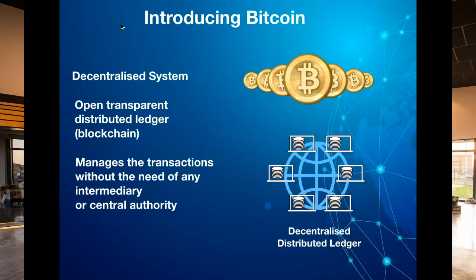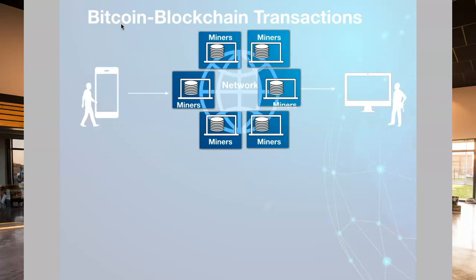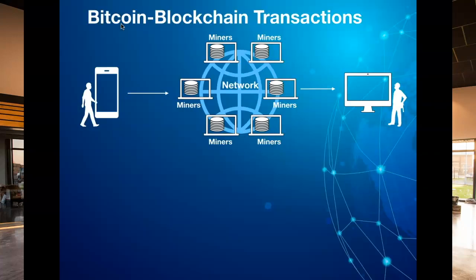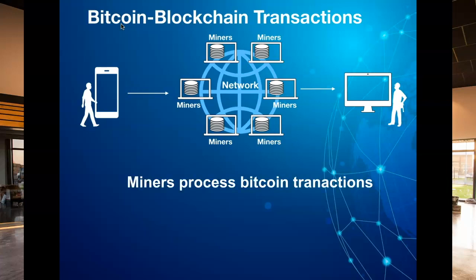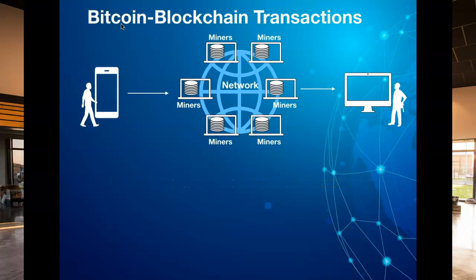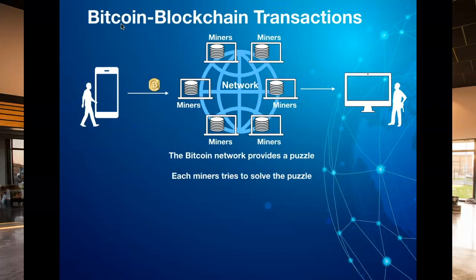Now as Bitcoin is a decentralized system, every computer system can be part of this decentralized system and hold copies of the distributed ledger. The computer systems in the Bitcoin network are referred to as miners. Now the miners play a very critical role in a decentralized network where they process the Bitcoin transactions. Now as there is no central authority to validate the transaction, consensus needs to be reached by the majority of the miners in the system. Now the miner basically solves a puzzle which requires a lot of computation power, and the first miner to solve the puzzle gets Bitcoin as a reward.